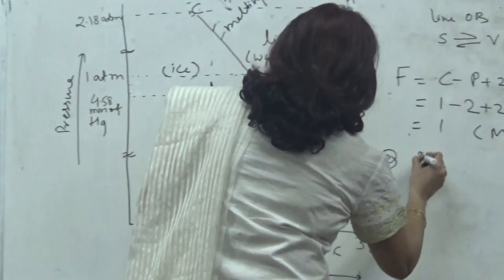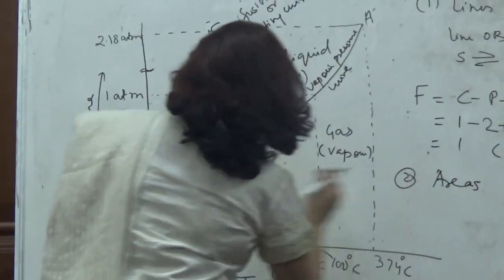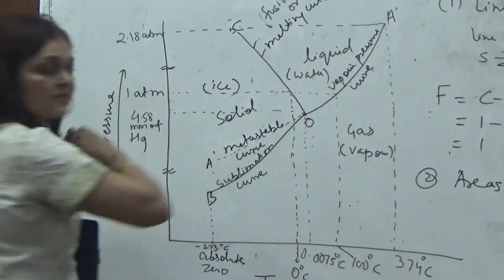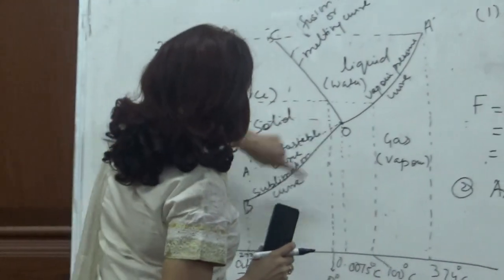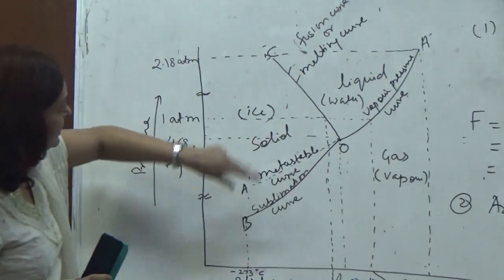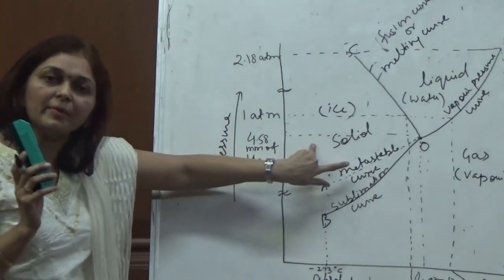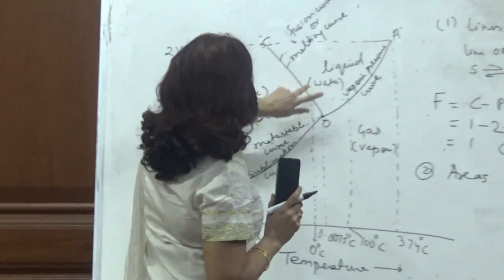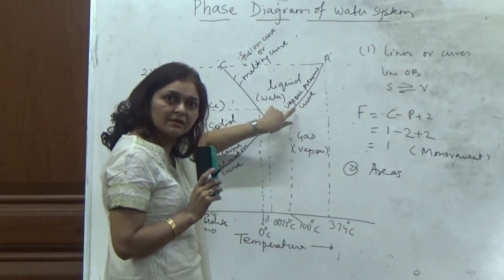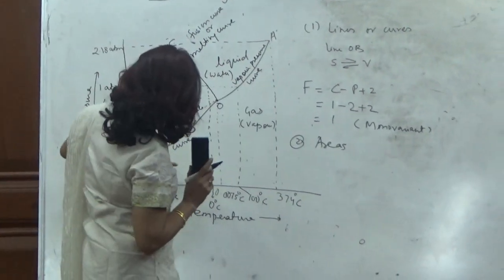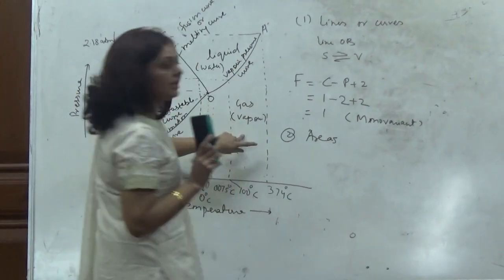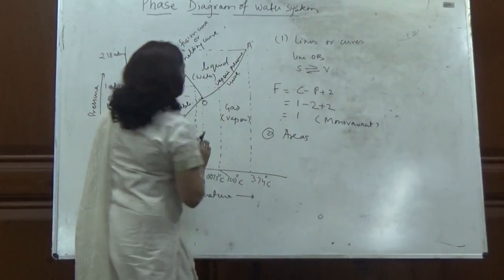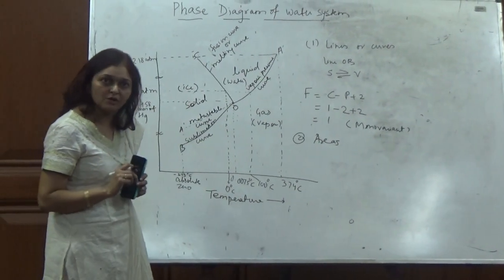Now for the areas. There are three areas: area BOC, area AOC, and area BOA. In area BOC, only one phase exists, which is solid. In area COA, only one phase exists, which is liquid. And in area BOA, only one phase exists, which is gas.